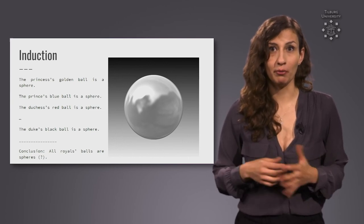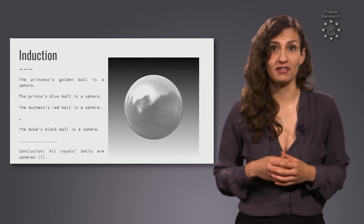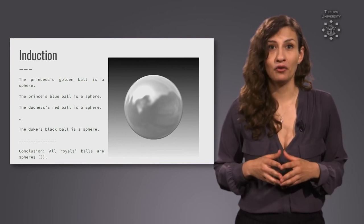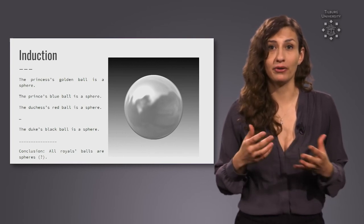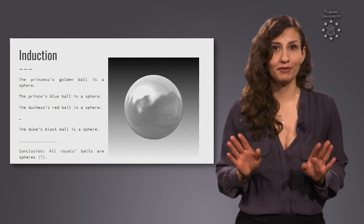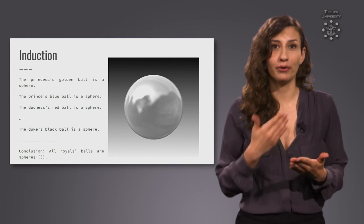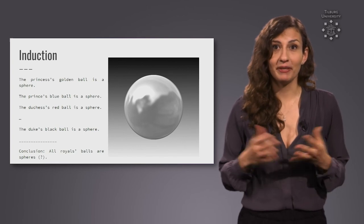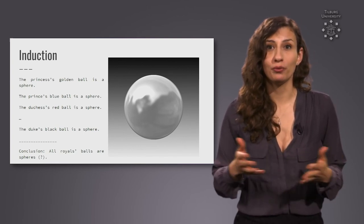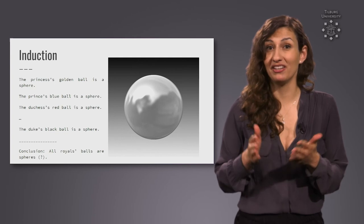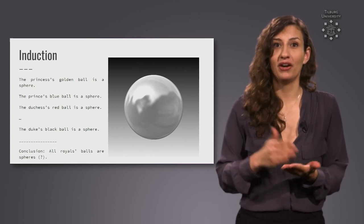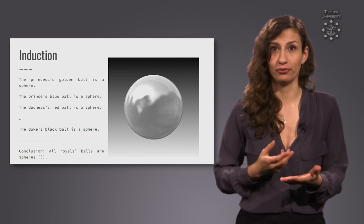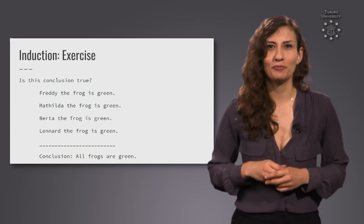The philosopher David Hume argued that these types of inferences are therefore never justified, no matter how many spherical royal balls we observe, we can never really infer that all royal balls are spheres. Basically, the argument is that we can never learn anything new without induction, but we can never really rely on our inductions to capture the truth. Let's put this into practice some more.